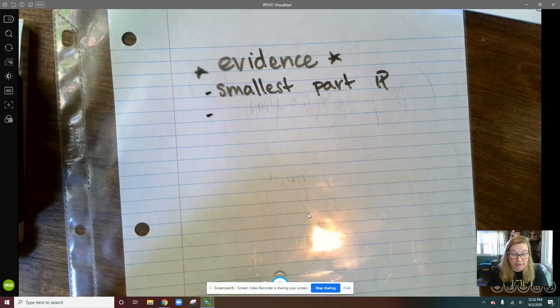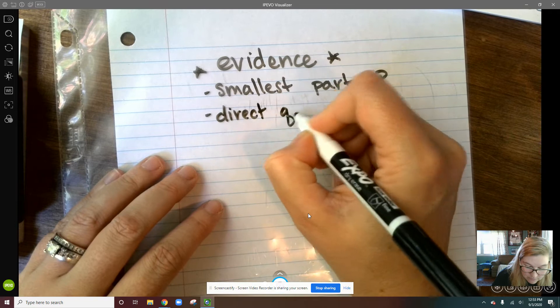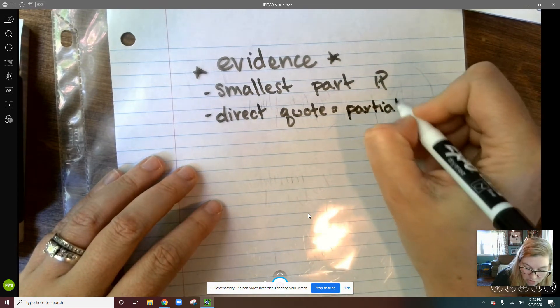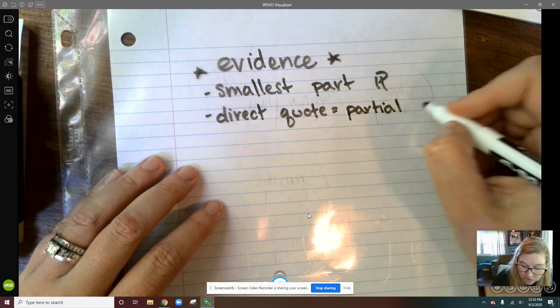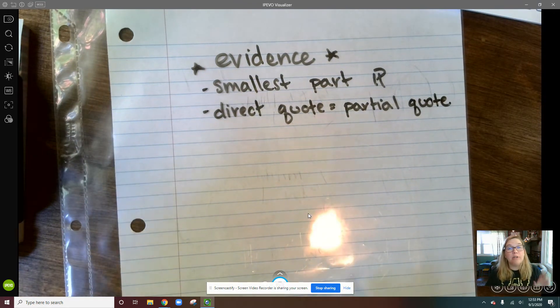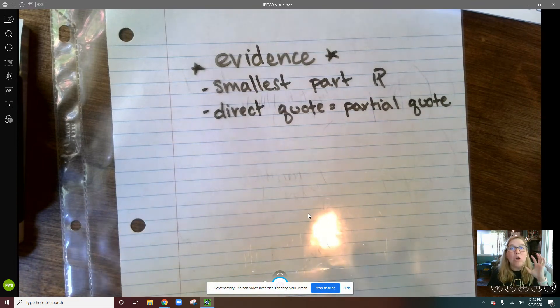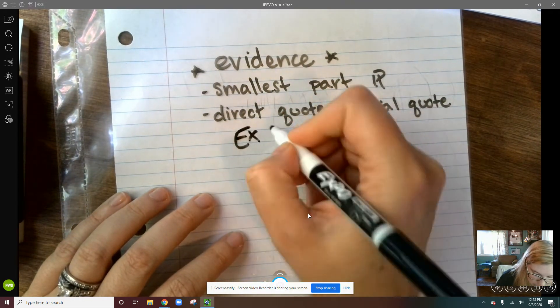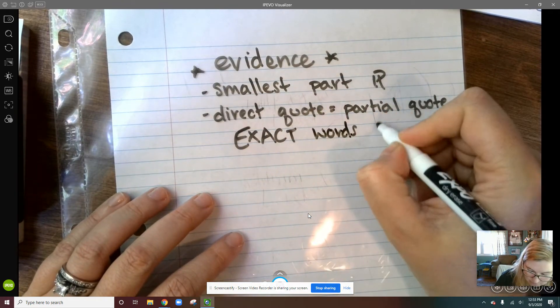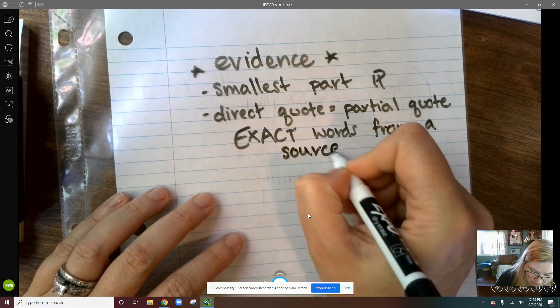And the other thing that I want to guide our evidence as we're going through is if it's a direct quote, it should be a partial quote. So you're never quoting the full sentence unless you actually need the full sentence that a writer used. And just because I say quote doesn't mean that in the original text it's actually in quotation marks. It's any exact words that we're taking from another text, from a source.